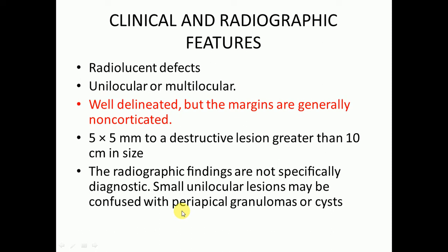Regarding radiographic features, it is a radiolucent defect. It may be unilocular — meaning a single locule of radiolucency — or multilocular, meaning multiple radiolucent lesions on the radiograph. It is well delineated but the margins are generally non-corticated. It is mostly around 5 by 5 mm in size, but in some cases it may reach 10 cm. The radiographic findings are not specifically diagnostic.